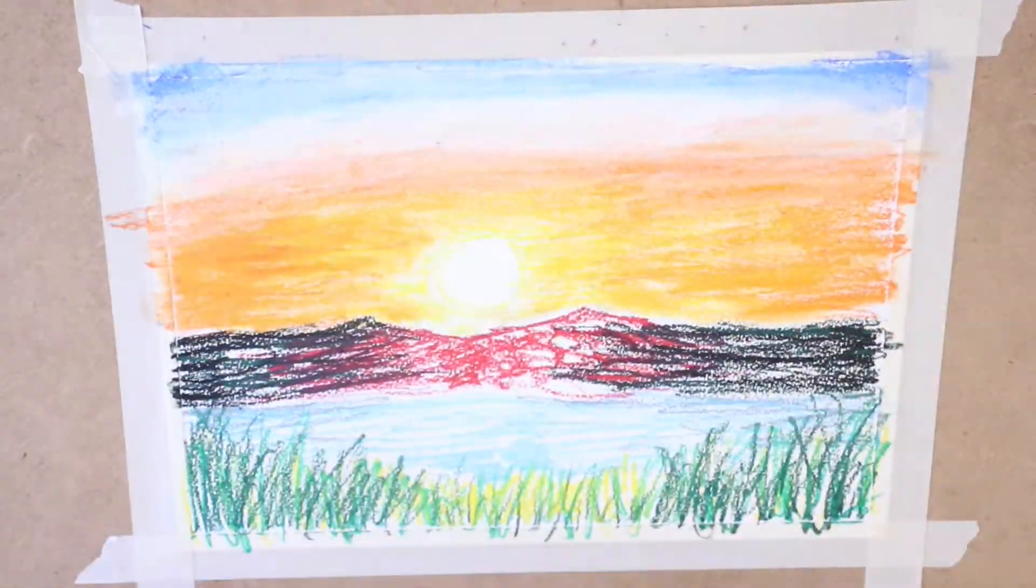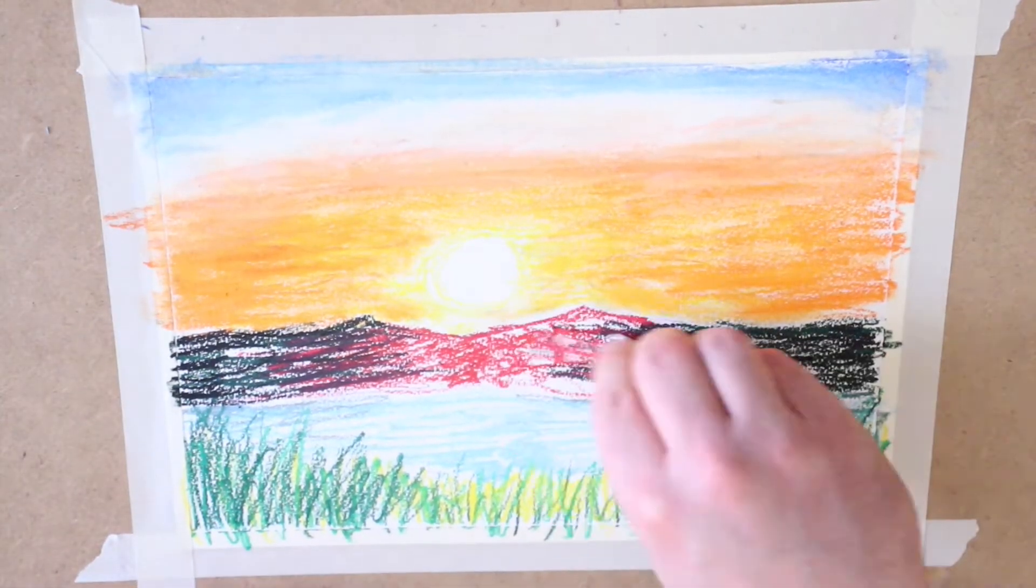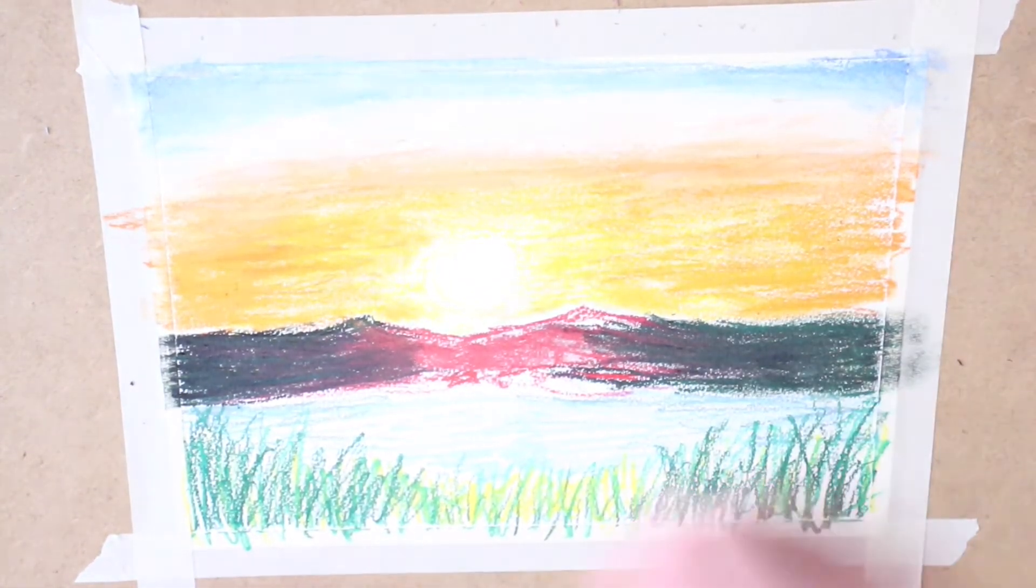So one thing that I'm doing here is I'm adding more detail as I go. So I go and I blend for a little bit, then I come back and add a little detail. Blend again, add a little more detail with some more oil pastels.